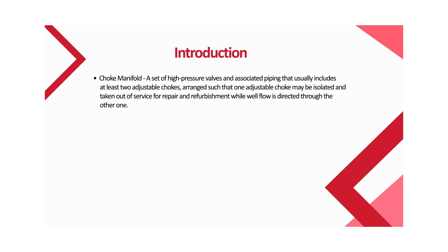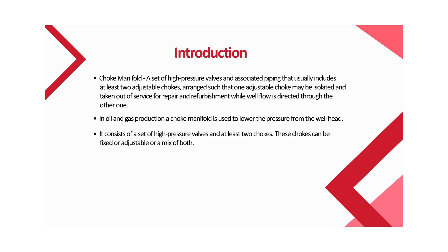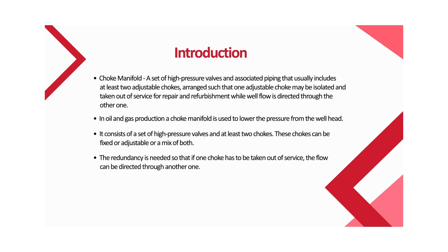A choke manifold is a set of high pressure valves and associated piping that usually includes at least two adjustable chokes, arranged such that one adjustable choke may be isolated and taken out of service for repair and refurbishment while well flow is directed through the other one.